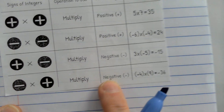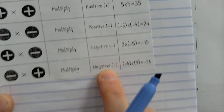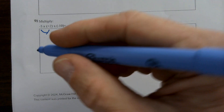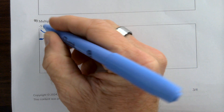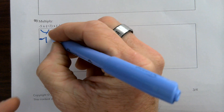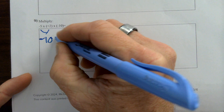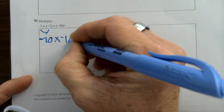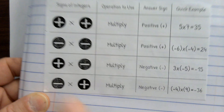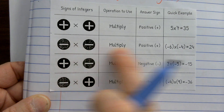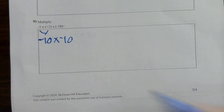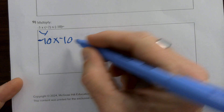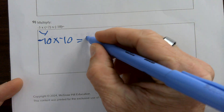Negative times a positive is going to be negative. So we do negative — 5 times 2 is 10. Then times another negative 10. And if you remember, a negative times a negative is positive.